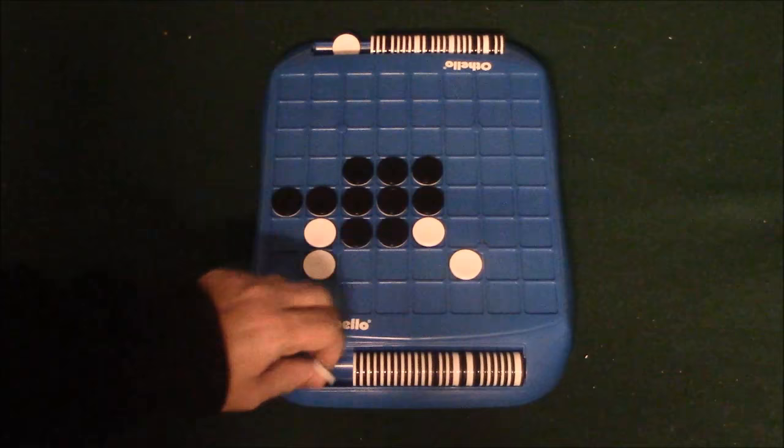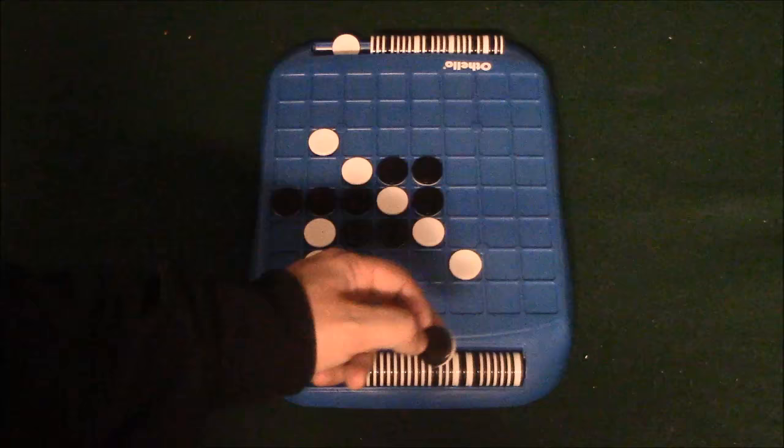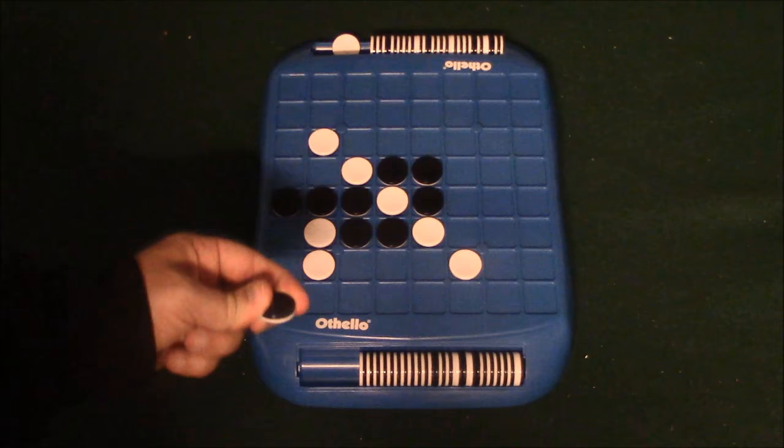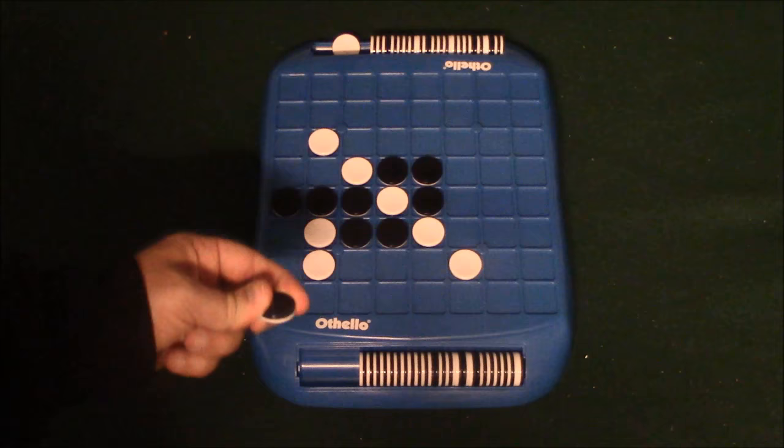So basically this is kind of how the game works. You're just going to keep on playing. And at the end of the game all these chips are going to be on here. And the winner is going to be the one that has the most color of their chips on the board. So let's say white has 30 chips and black has 20 chips. White will end up winning. So anyway, that's how the game works. Enjoy.